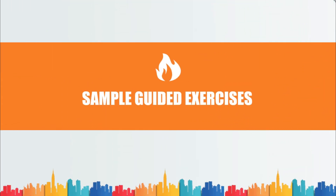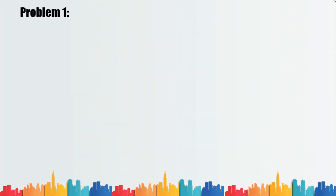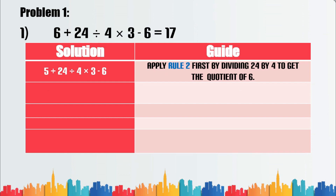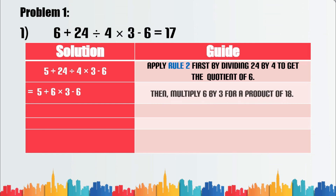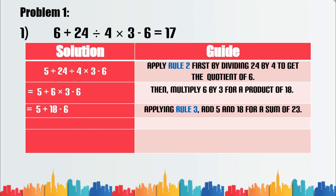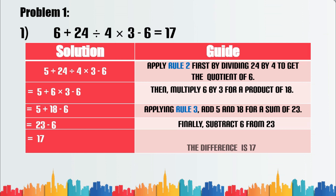Sample guided exercises. Problem number one: 6 plus 24 divided by 4 times 3 minus 6 equals 17. Apply rule 2 first by dividing 24 by 4 to get the quotient of 6. Then multiply 6 by 3 for a product of 18. Applying rule 3, add 6 and 18 for a sum of 24. Finally, subtract 6 from 23. The difference is 17.